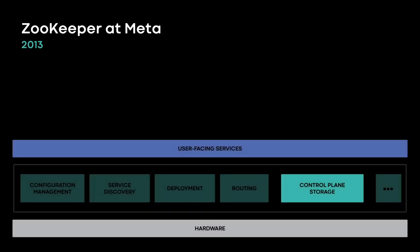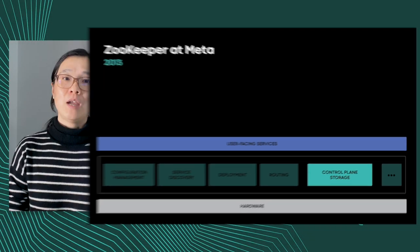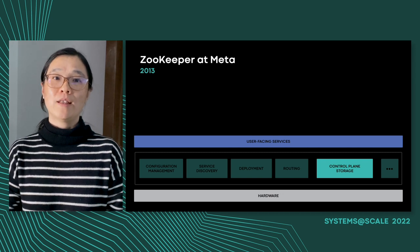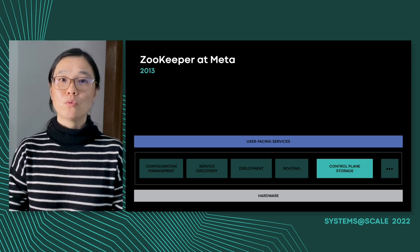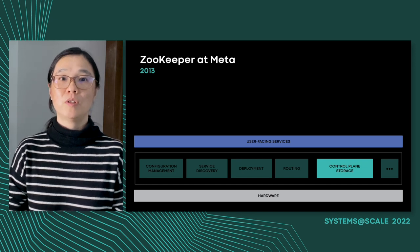Thanks, Chris. Now let's take a look at the evolving journey of ZooKeeper at Meta. We started with the ideal, simple approach: we decided ZooKeeper doesn't rely on any other Meta infrastructure — ZooKeeper will just run on top of the hardware. It wasn't hard for just one cluster. After all, ZooKeeper is designed to be at the bottom of the stack with zero dependencies.